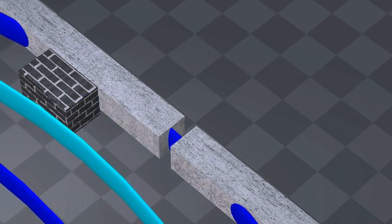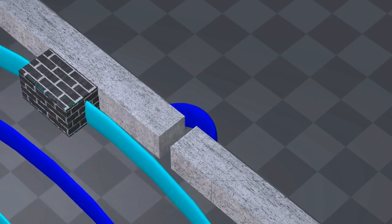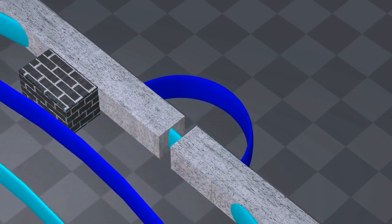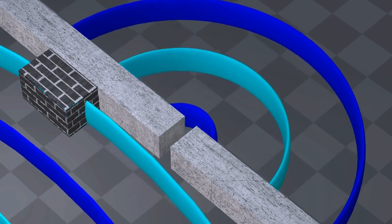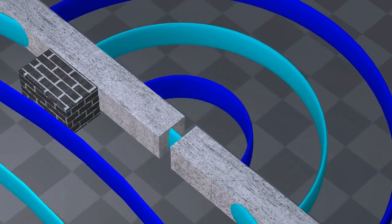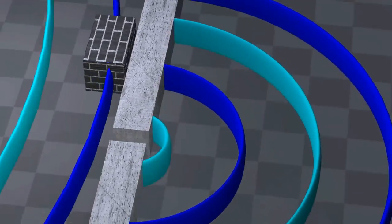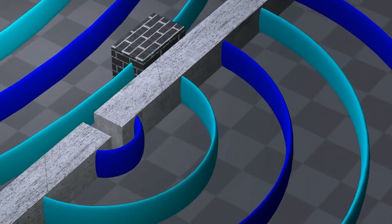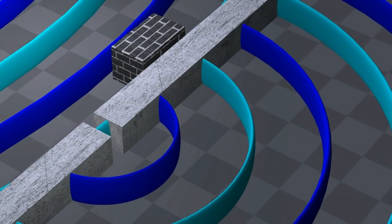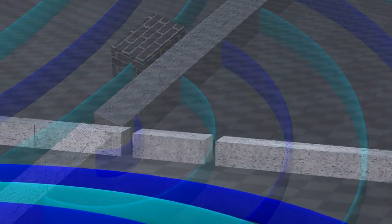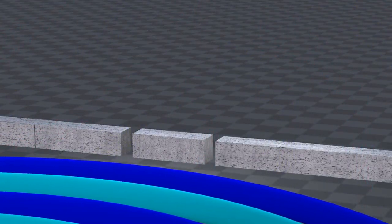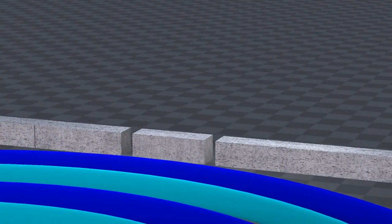When a wave passes through a hole, it spreads out on the other side. If there are two holes, two waves are produced.